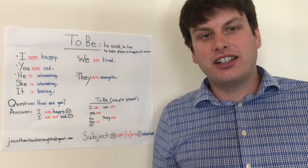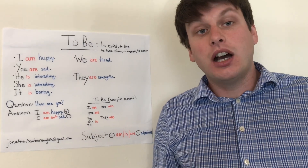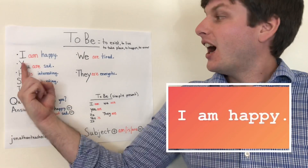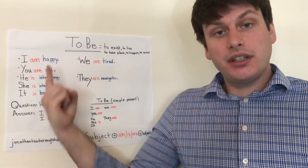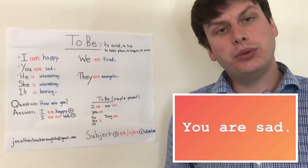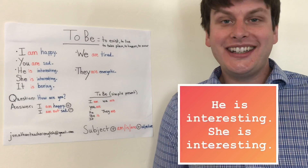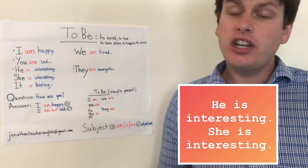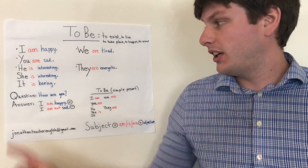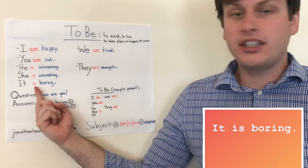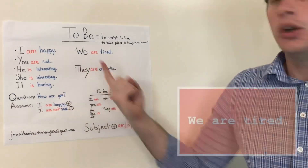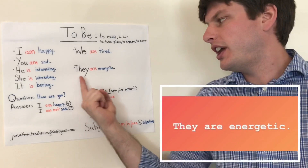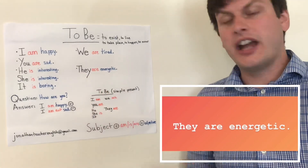Hi, I'm Jonathan, teacher. Let's talk about the verb to be. I am happy. You are sad. He is interesting. She is interesting. It is boring. We are tired. They are energetic.